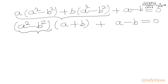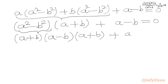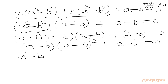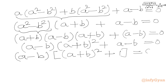Now we use the difference of two squares identity. We can write (a+b)(a−b)(a+b) + (a−b) = 0, or (a−b)[(a+b)² + 1] = 0. Taking (a−b) as common overall.